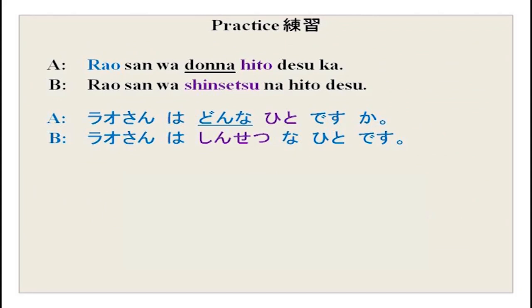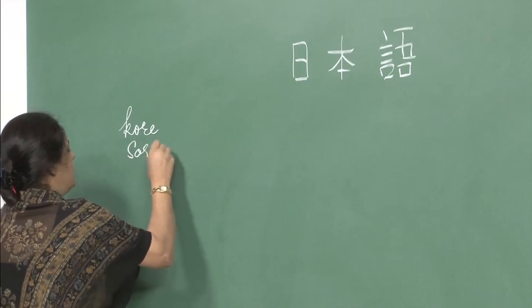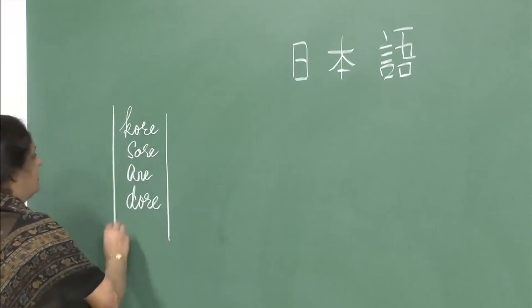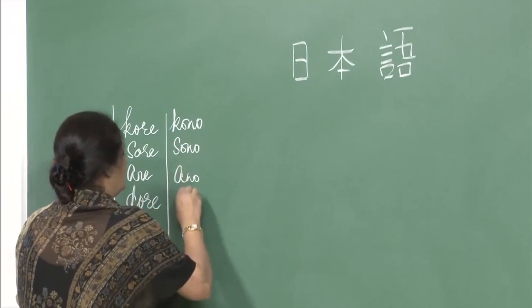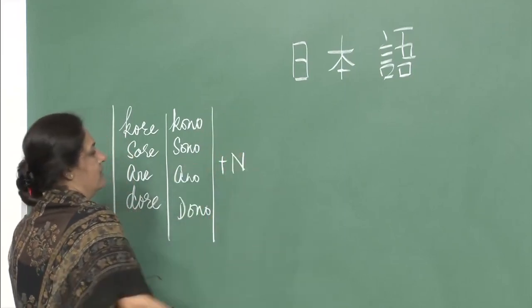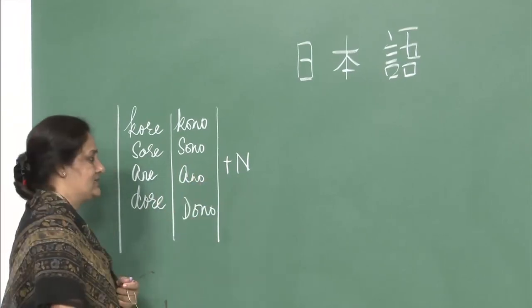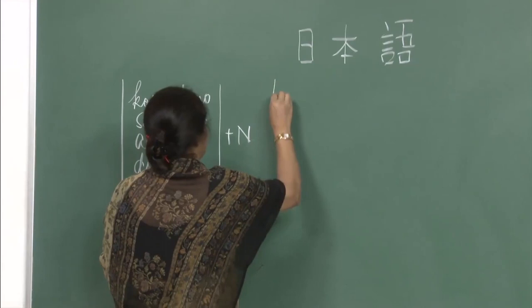We just did the word donna in one of the assignments. We have done the series kore, sore, are, and dore — and kono, sono, ano, and dono, which are used with a noun. Kono hito wa Tanaka-san desu. Sono hito wa Mariko-san desu. Ano hito wa gakusei desu — same series but with a different meaning.